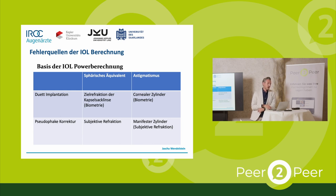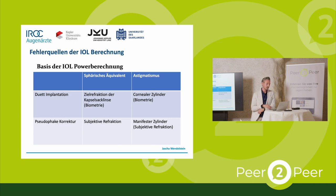What do I base my IOL power calculation on? For duet implantation, I don't have an intraocular lens in the eye yet but have the crystalline lens, so I base my calculation on biometry values and the target refraction of the IOL. If I want to fix astigmatism, I rely on the corneal cylinder from biometry or tomography. For pseudophakic correction, I use the subjective refraction of the patient, which is the most decisive factor, plus the manifest cylinder for toric additive IOLs.